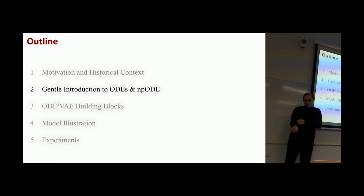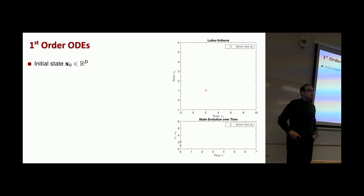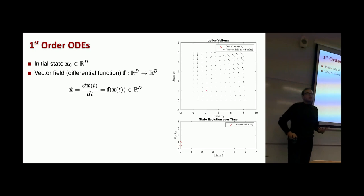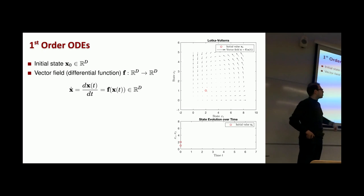Let's talk a bit more mathematically. I'll describe first-order ODEs using the Lotka-Volterra system as a running example. Lotka-Volterra is a first-order ODE system with two state variables and a parametric form. On the top figure I show the first state against the second state, and on the bottom both states' evolution over time — the red circles denote the initial values, essentially x0 in 2D. I then introduce the vector field or differential function, which takes the current state as input and outputs the time derivative — a function from R² to R². Here I visualize the vector field of Lotka-Volterra, where each arrow shows the value of the differential function computed at that location.